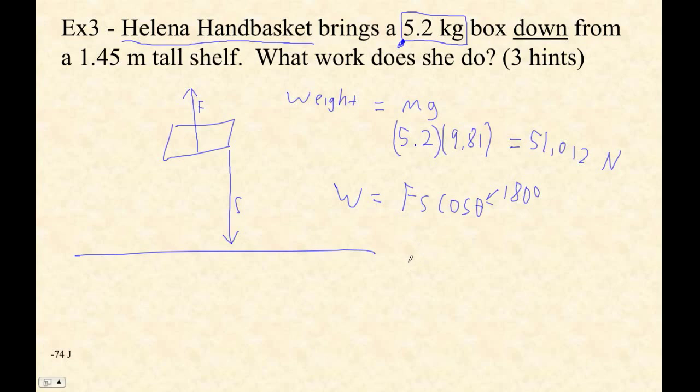So the work is going to be 51.012 newtons times the distance, 1.45 meters, and it's negative. So that times 1.45, I get 73.9674 newton meters, but it's negative. It means that she didn't give the box energy. She didn't transfer energy to the box. The box transferred energy to her.